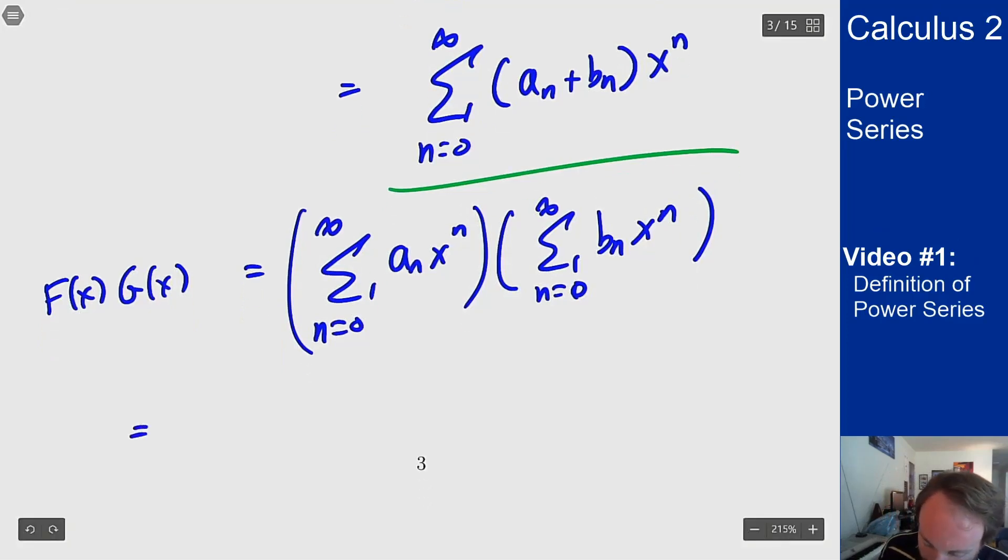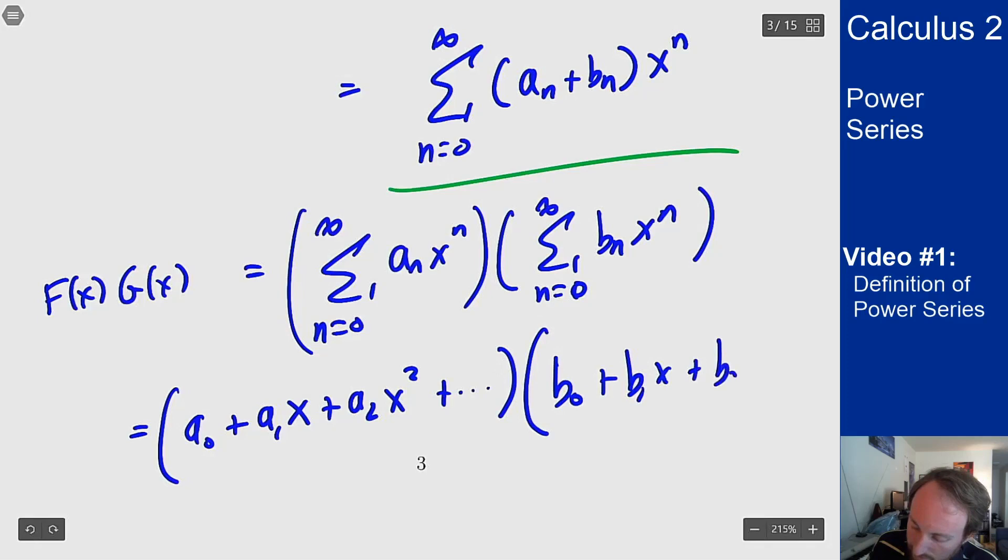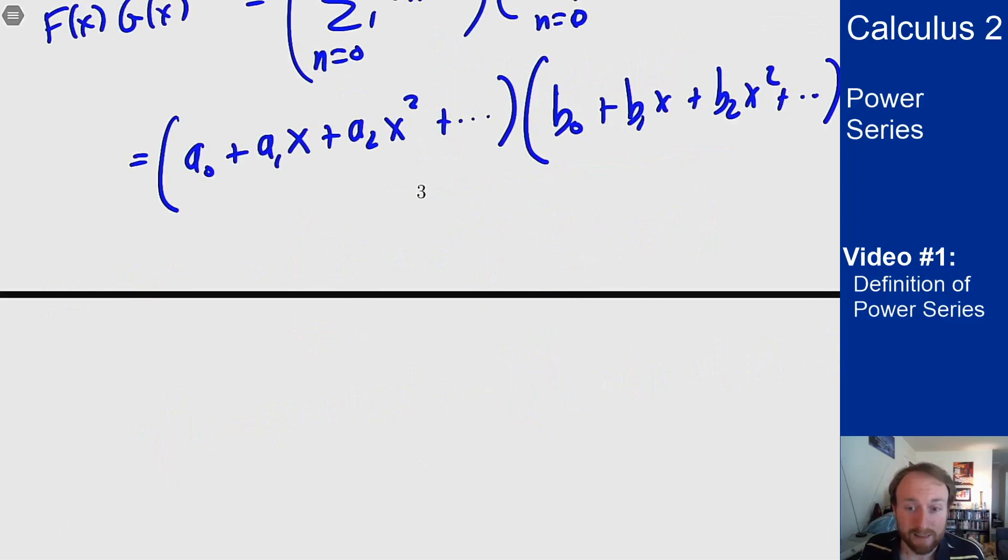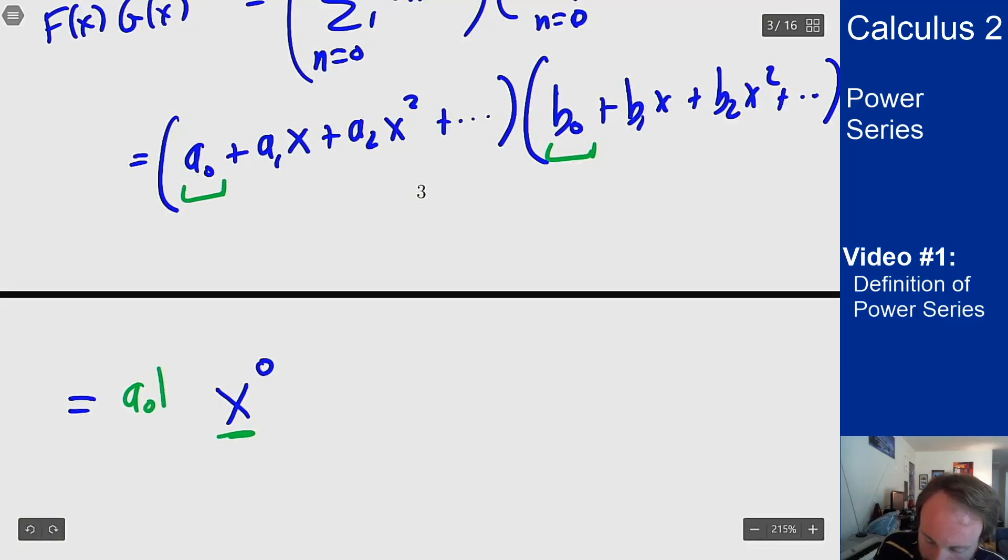I can rewrite this as (a_0 plus a_1 x plus a_2 x squared and so on) times (b_0 plus b_1 x plus b_2 x squared and so on). Now our goal is to get this as a power series so what I want to do is figure out how to get each power of x and use that to determine what I get for my series. So for instance how do I get an x to the zero term? Well the only way I get x to the zero is by pairing the zero with the zero here to give me no powers of x in the answer. This should be a_0 times b_0 for this one.